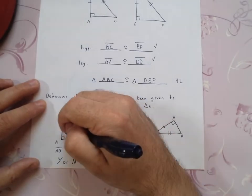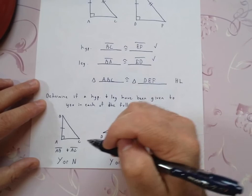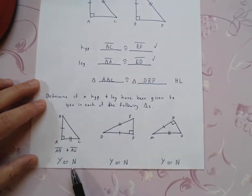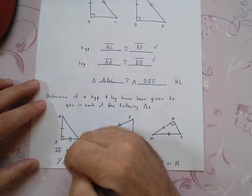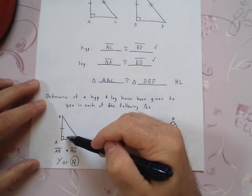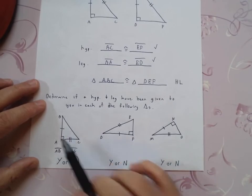Okay, when we look at this, there's side AB, there's side AC. Is that a hypotenuse and a leg? No. These are two legs, because remember I told you the legs form the right angle. So that's a no.